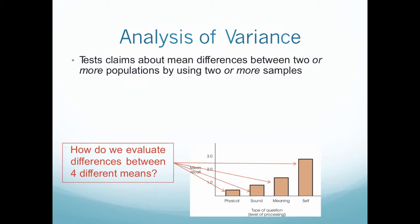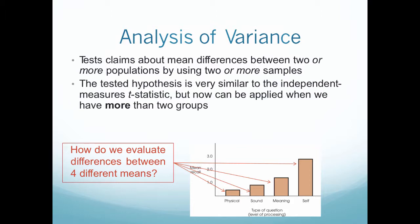So then we would use something called the analysis of variance, or the ANOVA. So the ANOVA's forte is it can test the difference between two or more populations by using two or more samples. The tested hypothesis is very similar to the independent measures t-statistic, but now we can apply it when we have more than two groups. So this is the goal of the ANOVA. It's multiple populations, multiple sample means, multiple sample variances. We can test all of those things at once.